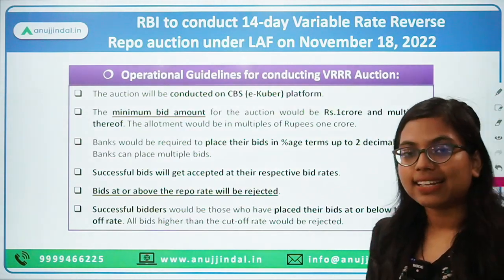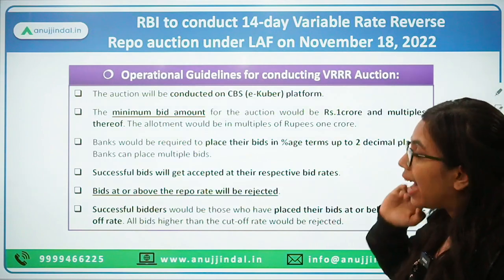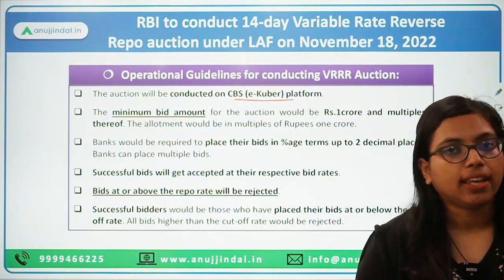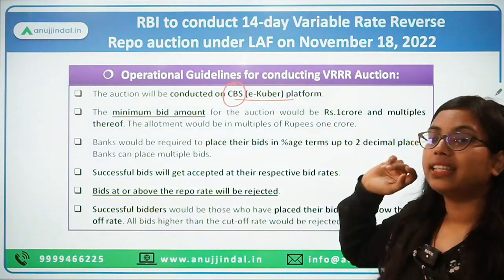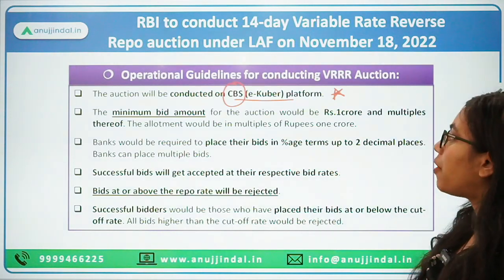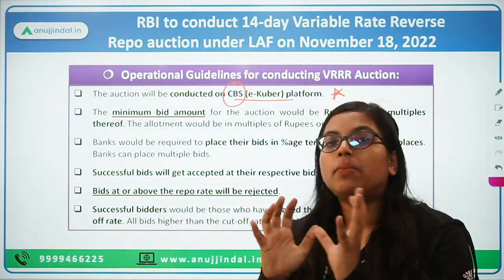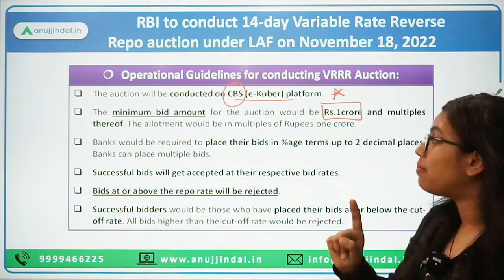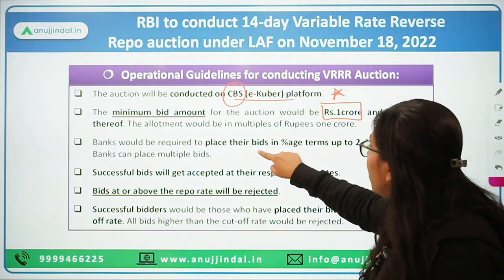Moving forward to the operational guidelines followed while conducting a variable reverse repo rate auction — certain rules are laid down. First, the auction is to be conducted on the CBS eKuber platform only. CBS stands for Core Banking Solution, which is the electronic platform of RBI. The second is the minimum bid amount. Whenever an auction is conducted by RBI, the minimum bid amount is rupees one crore, and multiples thereof.